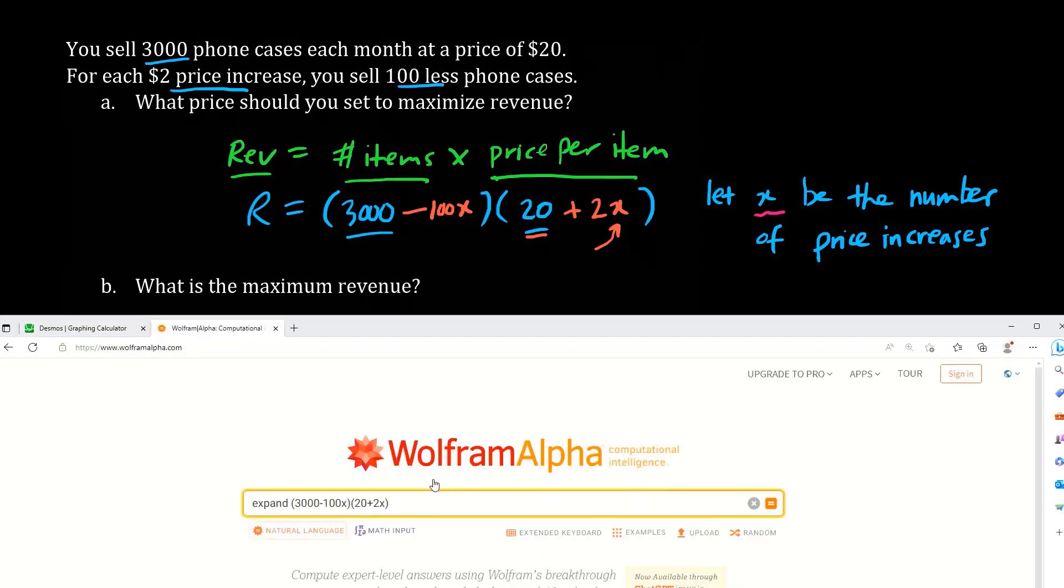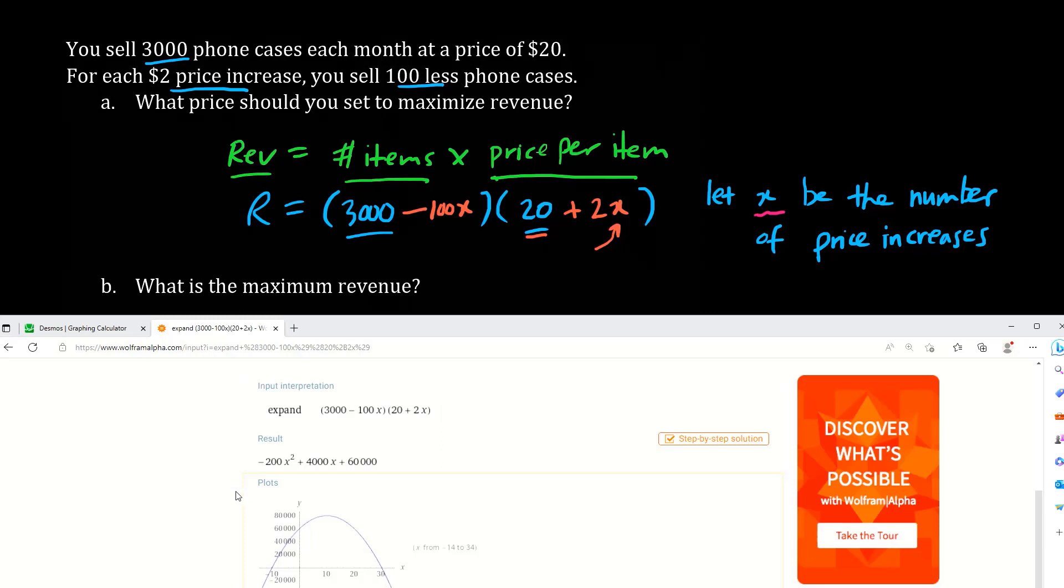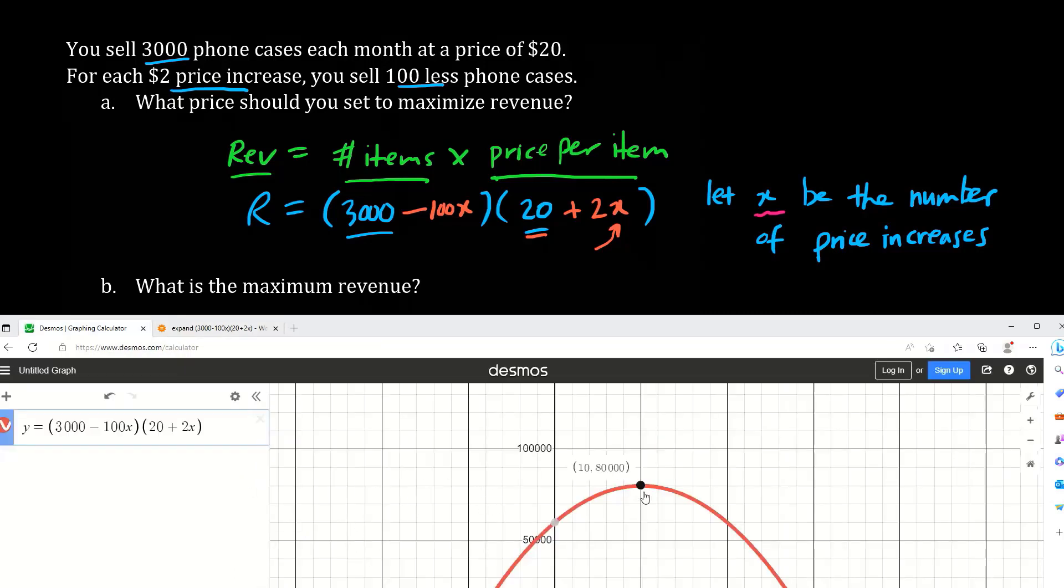By the way, we can use technology to help us expand this quadratic out, Wolfram Alpha. We realize we have a quadratic: negative 200x squared plus 4000x plus 60,000. We can find the x-value of the vertex by using the vertex formula, negative b over 2a. We know that x is 10, and when x is 10, we can substitute back into the revenue function to figure out that the y value, the maximized result, is $80,000.